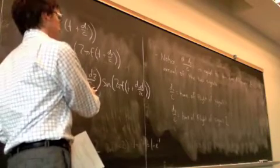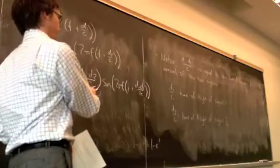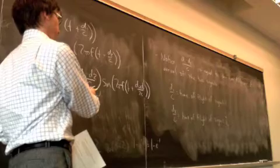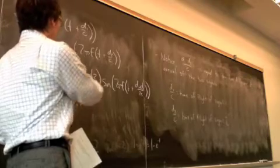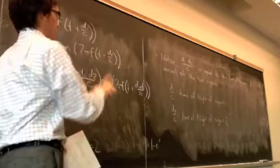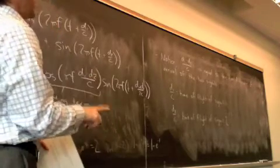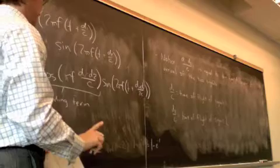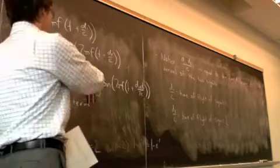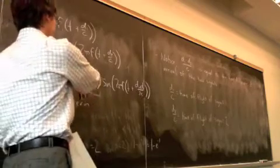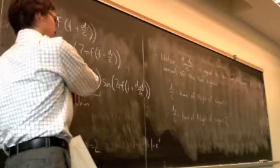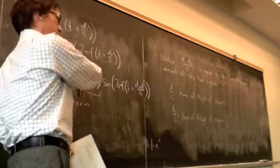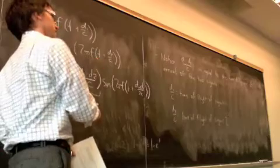Frequency is Hertz, which is cycles per second. So this is seconds, cycles per second, and 2π is radians per cycle.